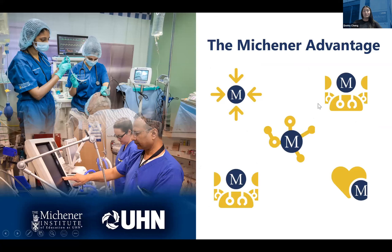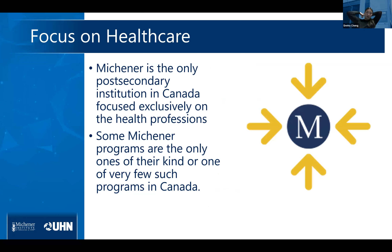I'm going to briefly go over what we call the Mitchner Advantage — five features that make us unique in the post-secondary education space. First is our focus on healthcare: we are the only post-secondary institution in Canada that has exclusively health professions as programs — no business, no arts, exclusively applied health sciences. Because of this, some of our programs are among the only ones of their kind in Canada.